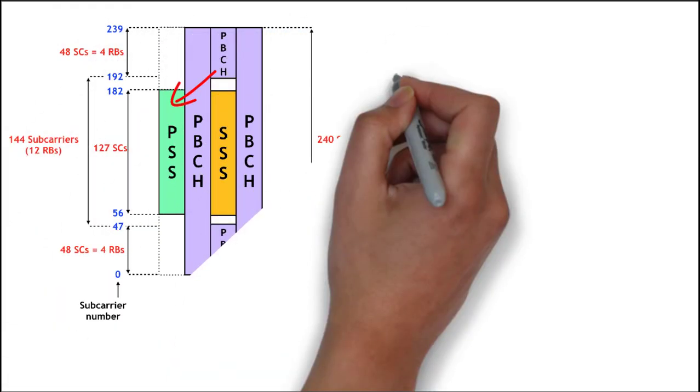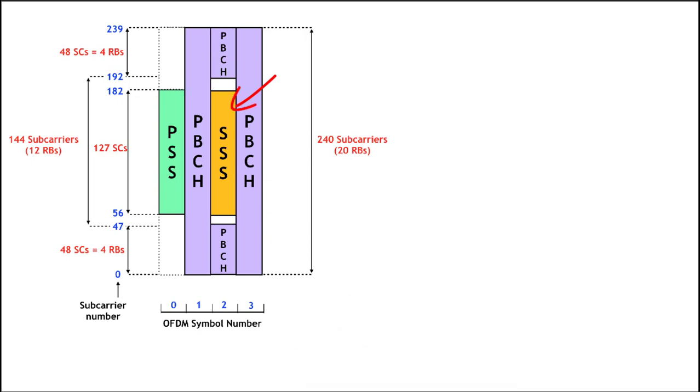SSB block contains PSS primary synchronization signal, SSS secondary synchronization signal and PBCH that is transmitted in symbol. Synchronization signals are used during cell search process when you want to camp on a cell. SSB blocks are also used for RSRP, RSRQ and SINR measurement. SSB block is used in downlink transmission and occupies 20 resource blocks in frequency domain and 4 symbols in the time domain.